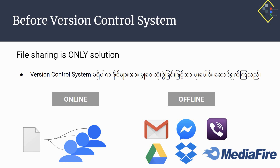The version control system is called collaborative work. We can use it as a solution for file sharing — we can share files easily.